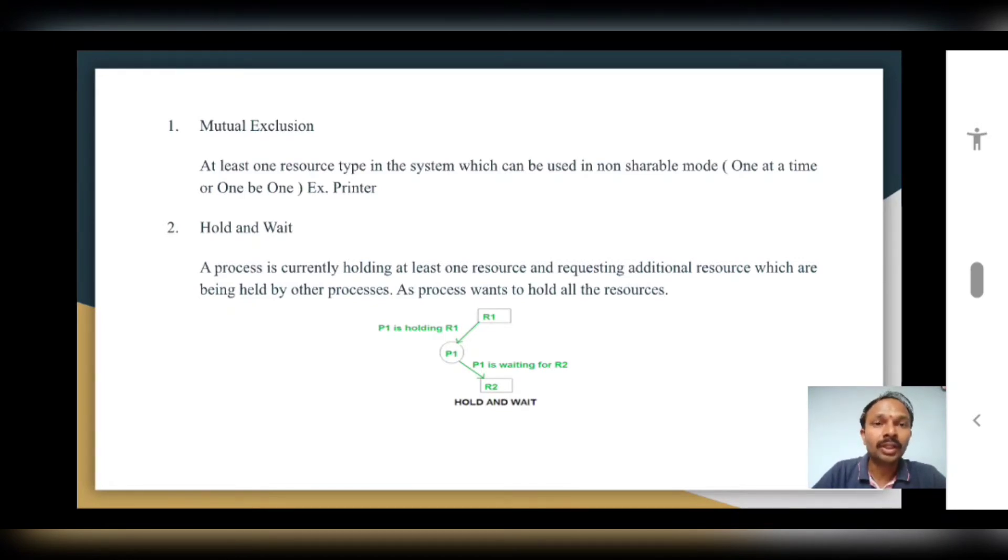If we give a command to the printer for printing five different pages, one process takes charge of a page, and one particular process is executing at a time. So we observe that one page is getting printed at a time. Every process existence is independent over here.